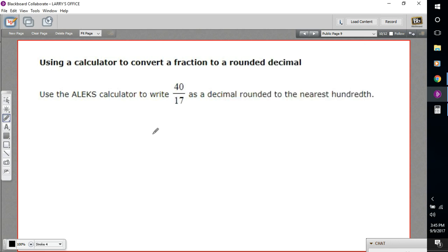So in this case, 2.35 is our answer. So that is how to convert a fraction to a rounded decimal.